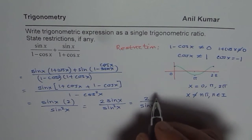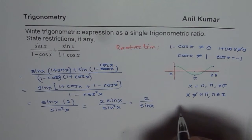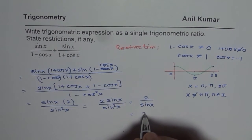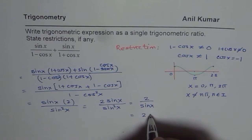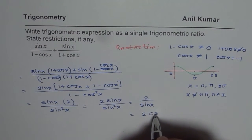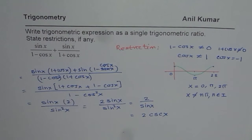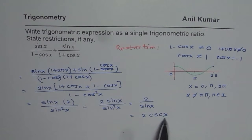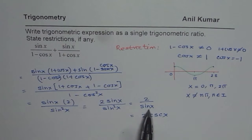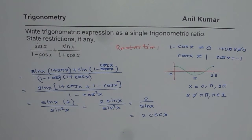Now, 2 over sin x equals 2 times 1 over sin x, and 1 over sin x is cosecant x. So this expression can be written as 2 cosecant x. When you simplify, you get sin x in the denominator, which means sin x cannot be 0. That condition is also satisfied by the restriction we gave earlier.